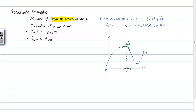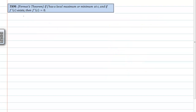Getting back to what we need: you'll also need to know the definition of the derivative, we are going to be using the squeeze theorem, and you'll also need to know the definition of absolute value — at least the piecewise-defined function version of it — that's what I'm going to use in the proof.